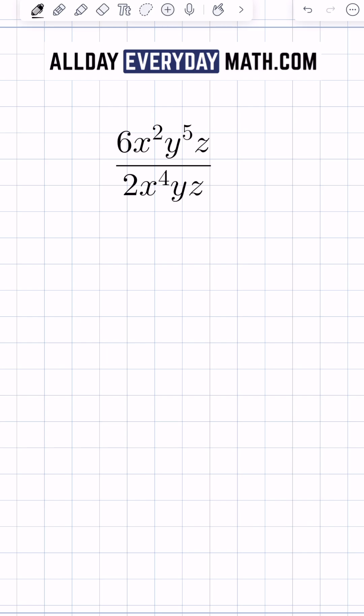The first thing we're going to do is look at our coefficients. We have 6 divided by 2, which is just going to be 3.